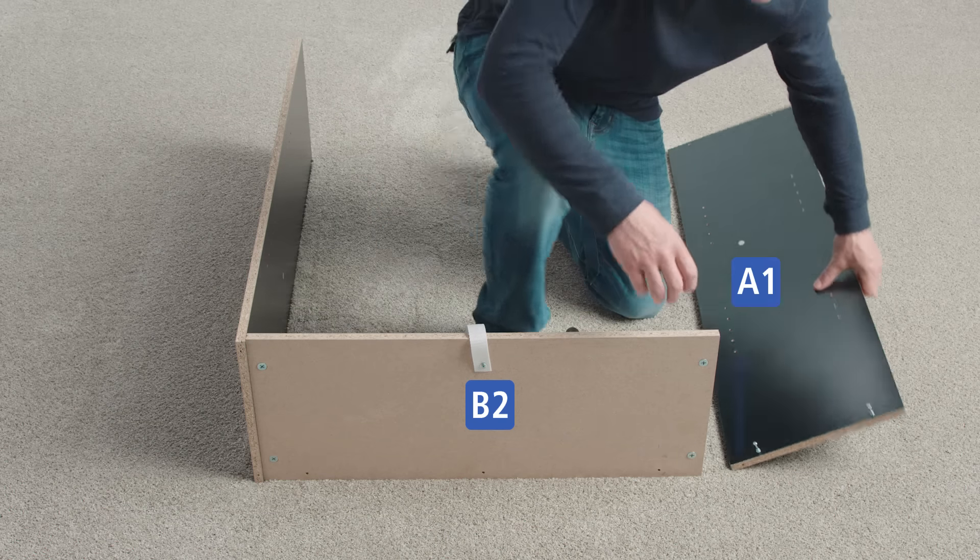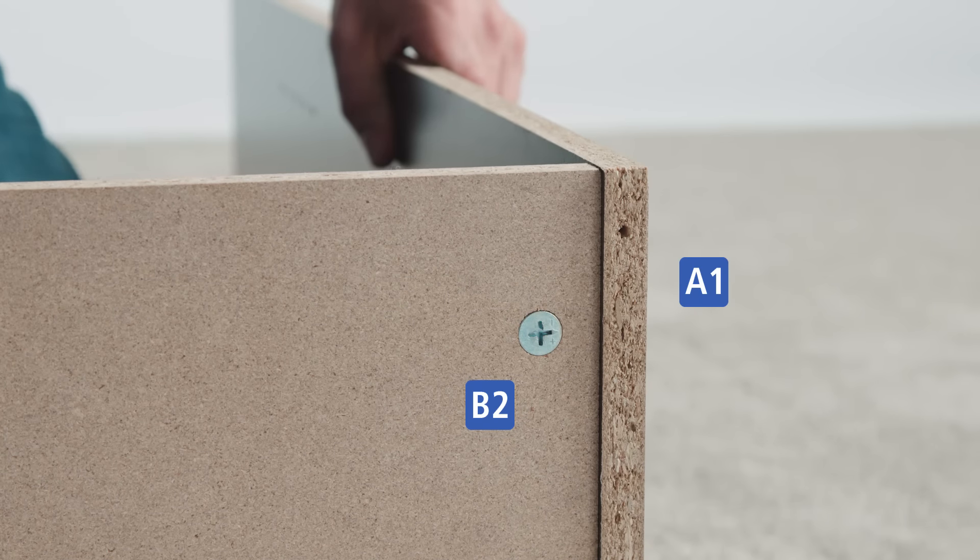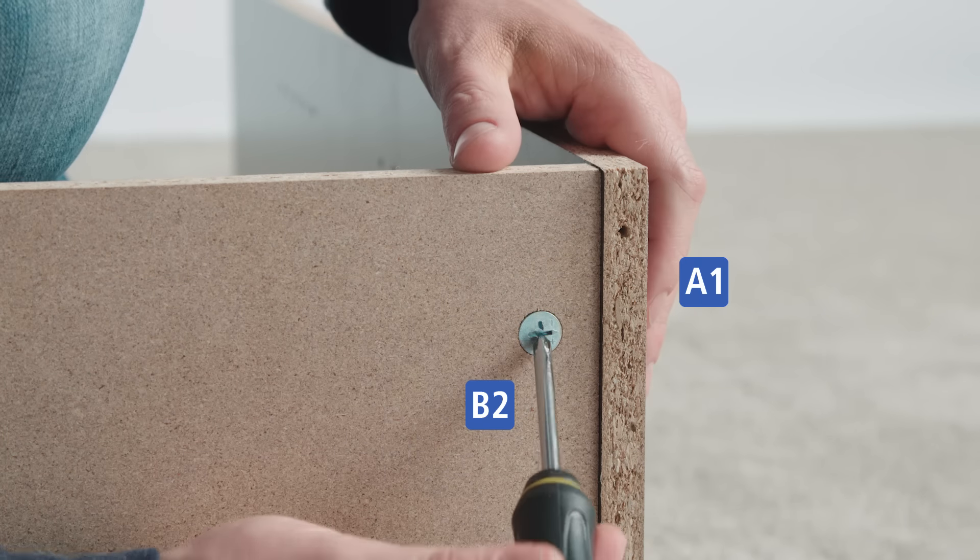Stand the second A1 panel on its side with the unfinished edge facing up. Insert the two cam bolts into the holes of B2 and lock the cams in place.